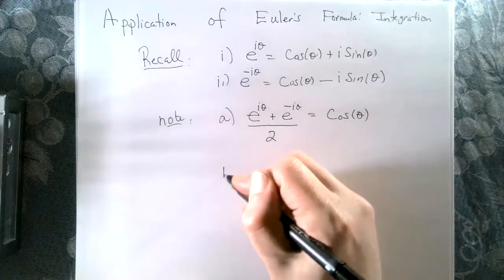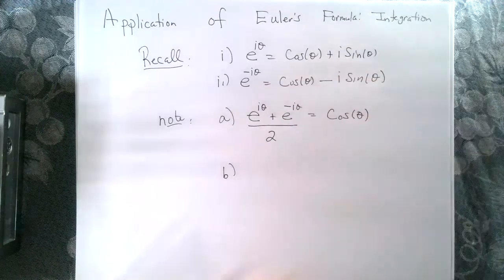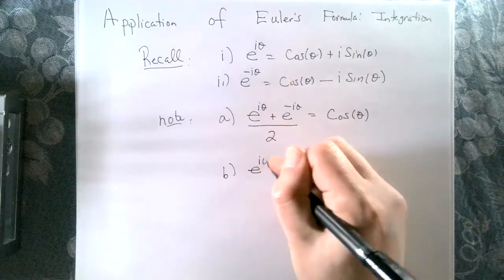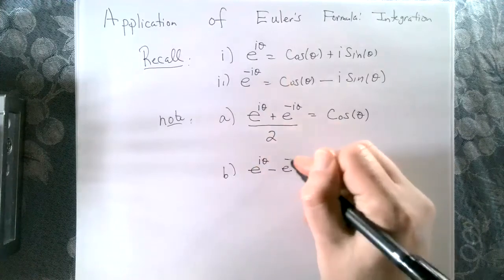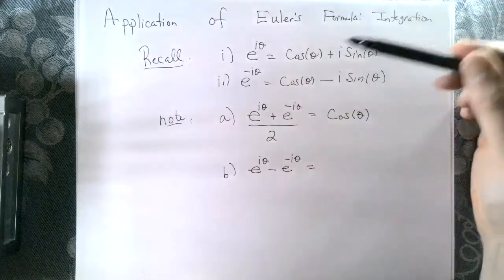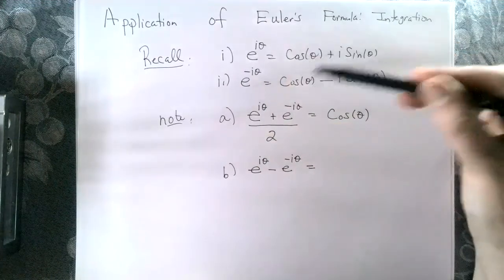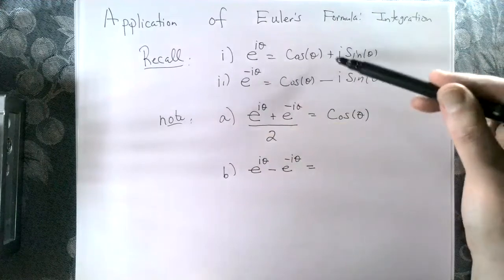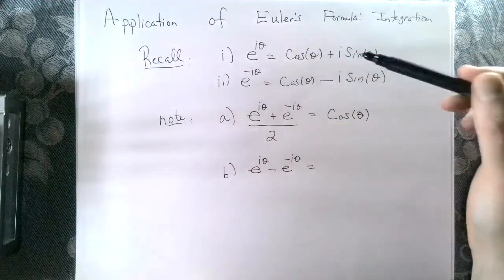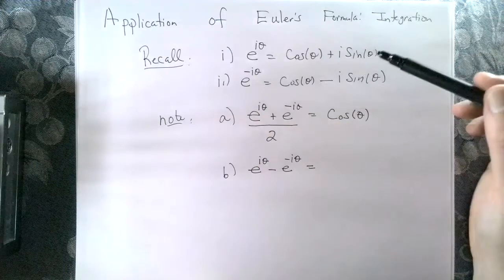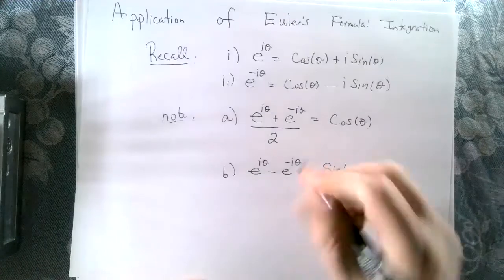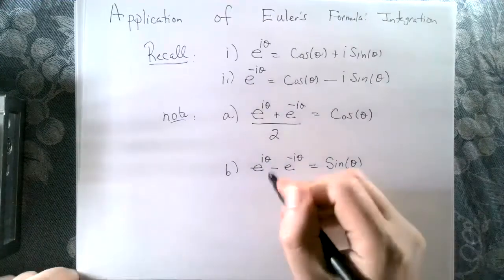We can do something similar by taking the difference of each side. The difference of the left side is e to the i theta minus e to the minus i theta. The cosines vanish, and noting the double negatives, I get two i sine of theta. Dividing out the two i gives me an expression for sine of theta.